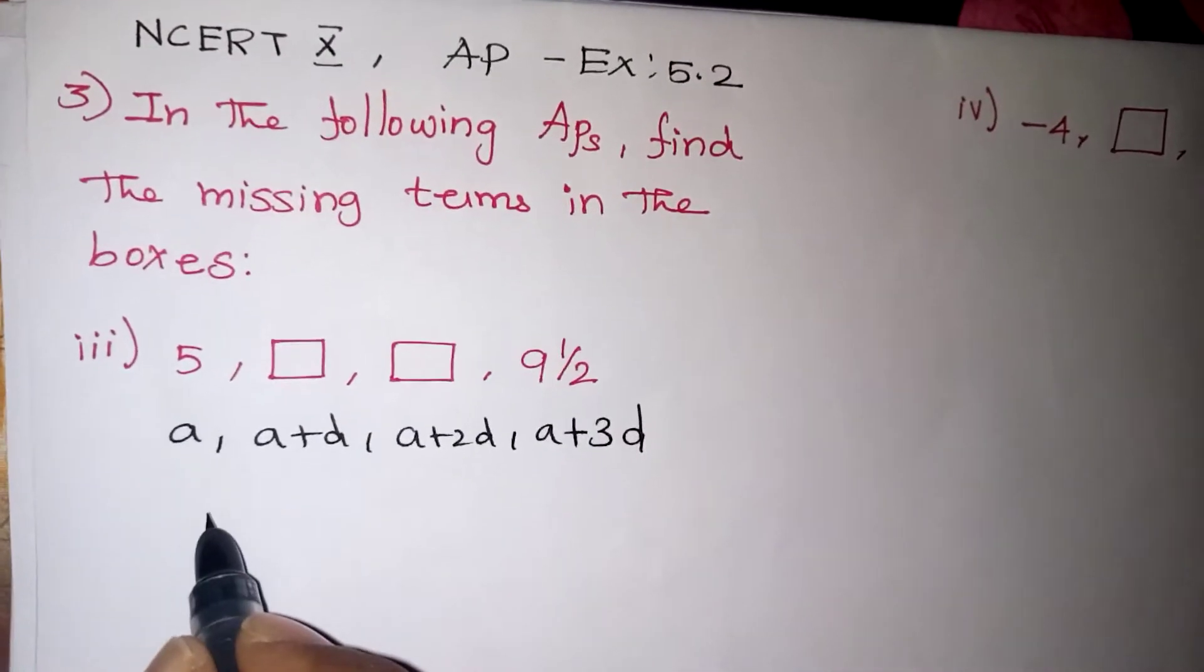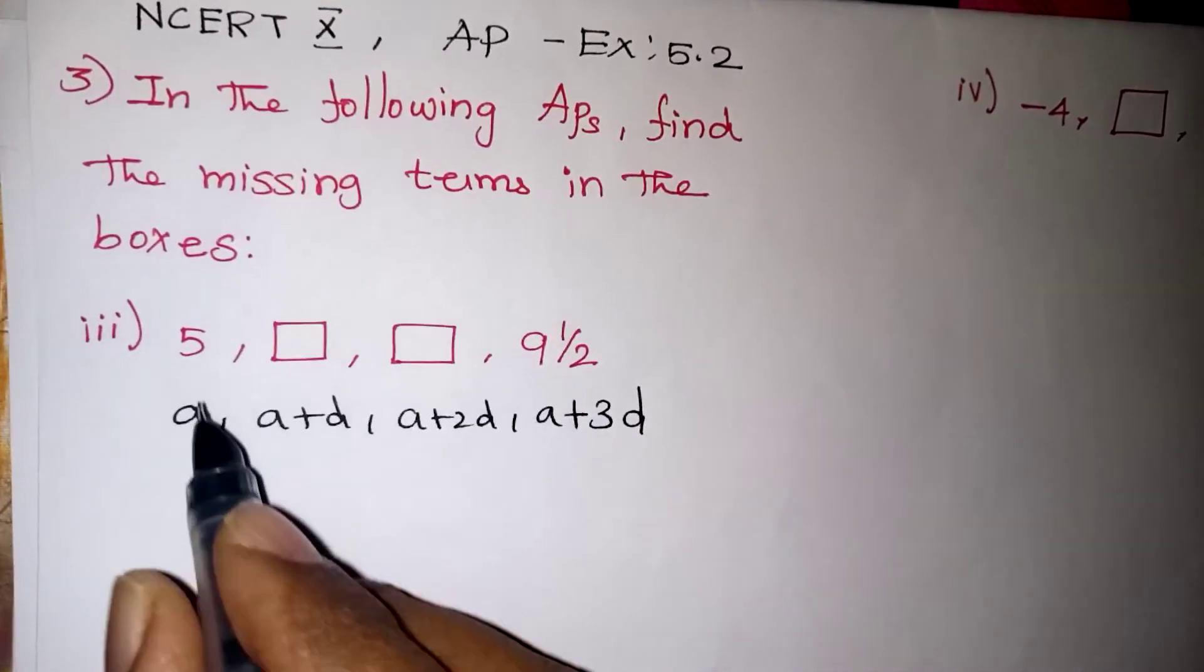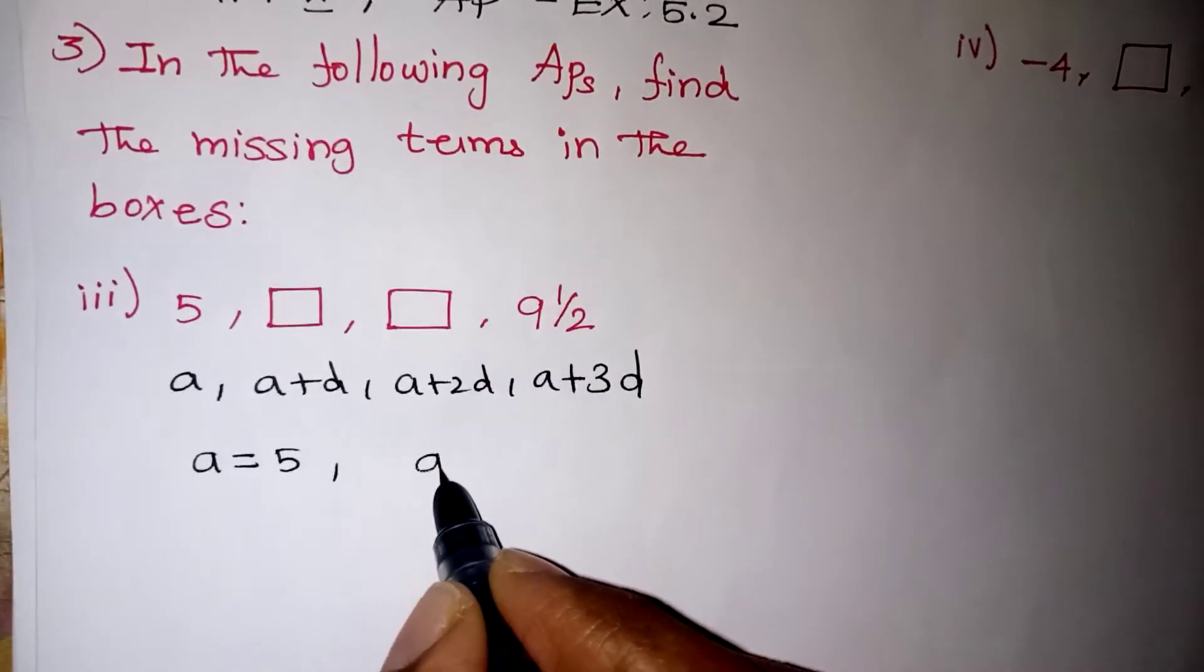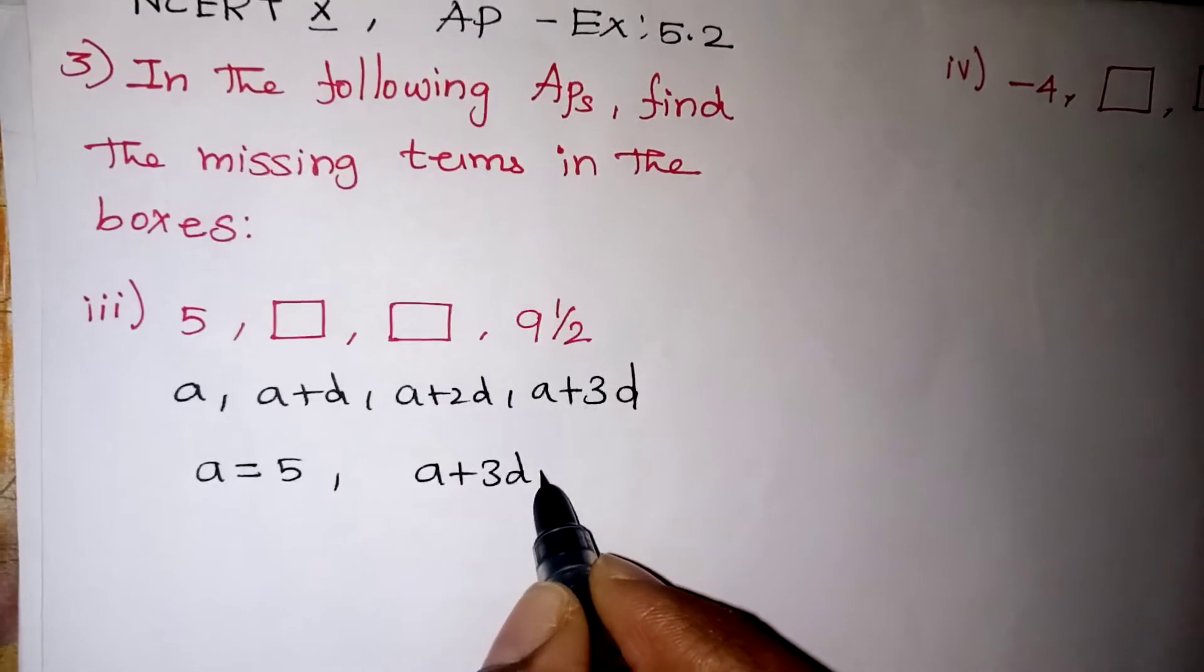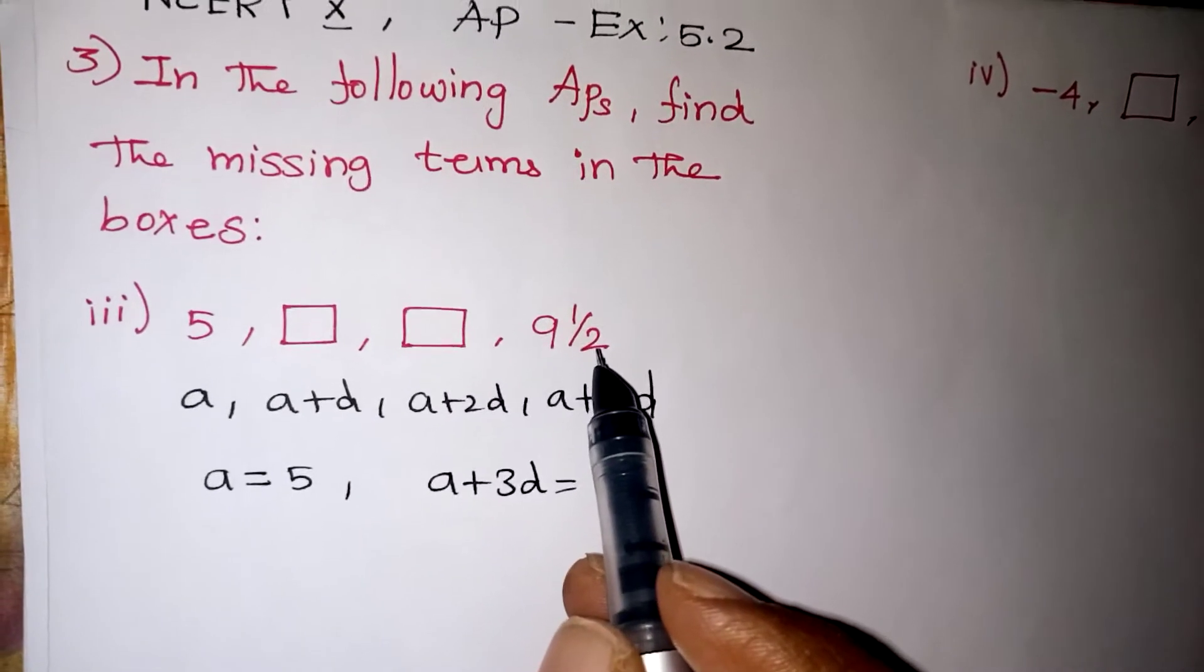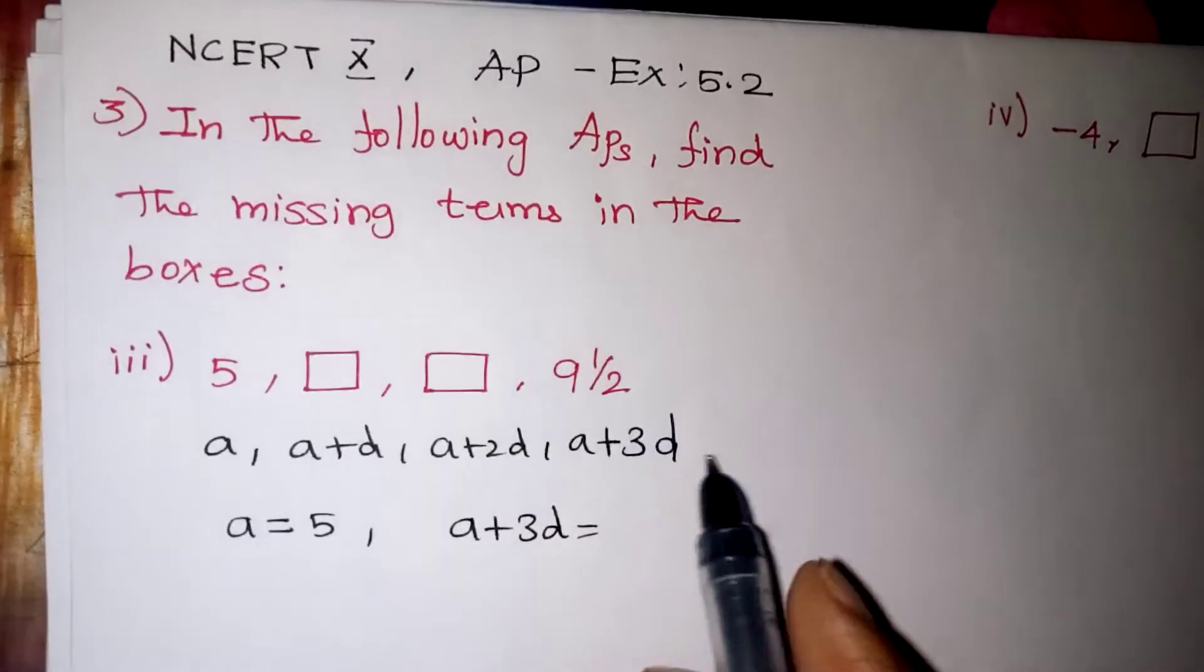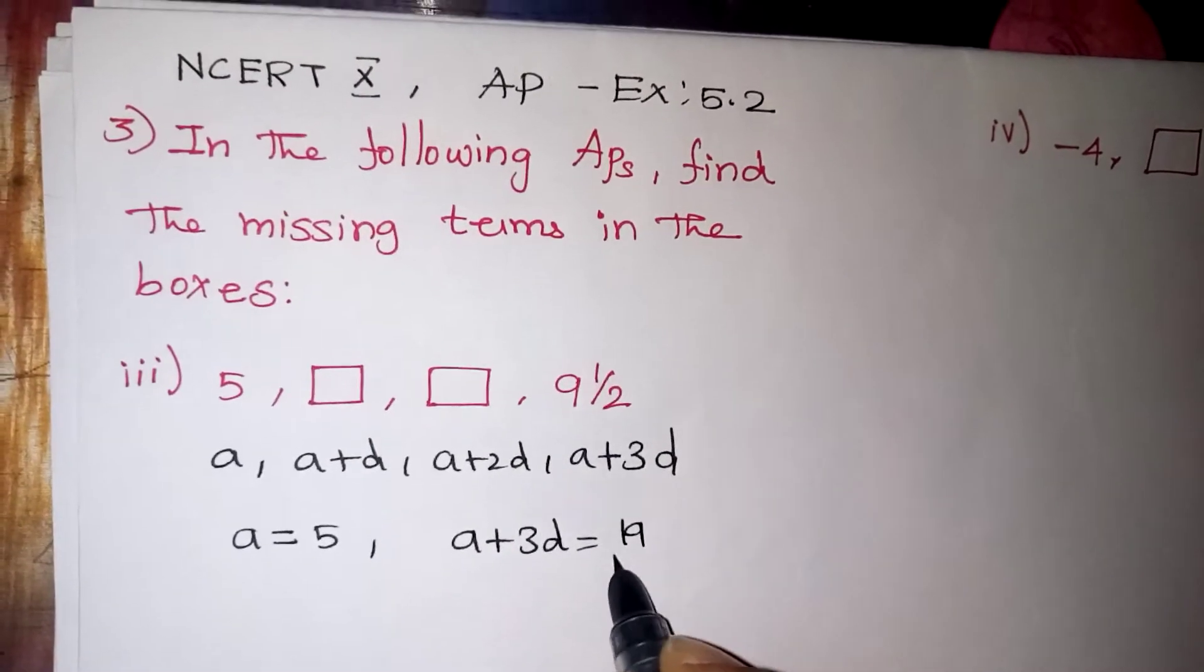So A value is given as 5. A is equal to 5. Here A plus 3D is equal to 9 and a half is given. So A plus 3D is equal to, this one is a mixed fraction, make it into improper. 9 twos are 18, 18 plus 1 is 19 by 2.